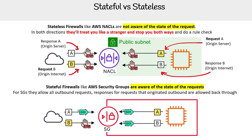The idea here is very similar. We have request A — shown in yellow here — originally from the server, and it's going to go out. As we said, all outbound requests are allowed, so it goes right out to the internet. The internet returns a response, and the response is allowed back because it remembers that the request came from the EC2 instance. So if it goes out, it gets to come back in.